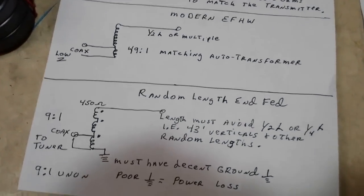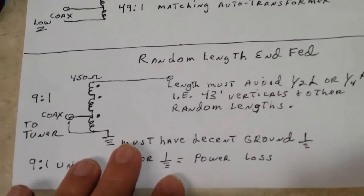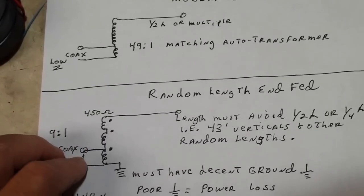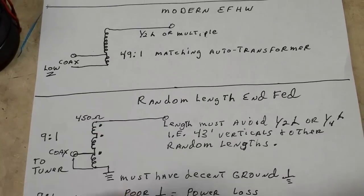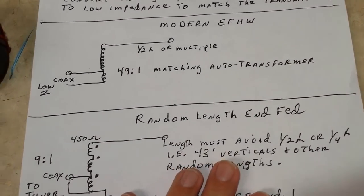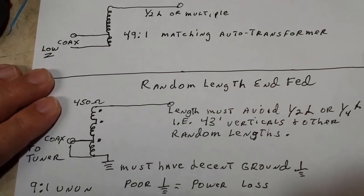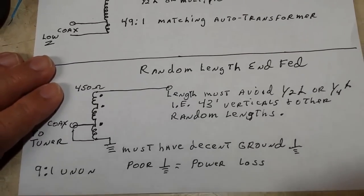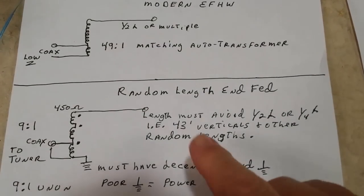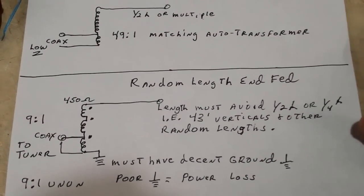First of all, let's talk about the popular nine-to-one type unun that is very common these days. And here we have some comparisons of drawing that shows how a random length NFED antenna is laid out. And this is your nine-to-one unun. 50 ohm input from your station and the output side is 450, which is nine times 50. And so it's looking for an impedance somewhere in the neighborhood of 450 ohms in order to provide a good match. And these are used often with 43-foot verticals, random length antennas, and they do require a decent ground. And the reason for that is because the ground is actually the other half of your antenna.